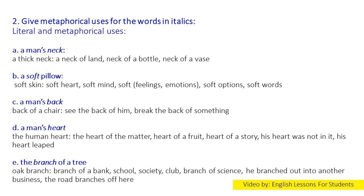2. Give metaphorical uses for the words in italics. A. A man's neck — a thick neck, a neck of land, a neck of a bottle, a neck of a vase. B. Soft — a soft pillow, soft skin, soft heart, soft mind, soft feelings and emotions, soft options, soft words. C. A man's back — back of a chair, the back of him, break the back of something. D. A man's heart — the human heart, the heart of the matter, heart of a fruit, heart of a story, his heart was not in it, his heart leapt. E. The branch of a tree — oak branch, branch of a bank, school, society, club, branch of science.